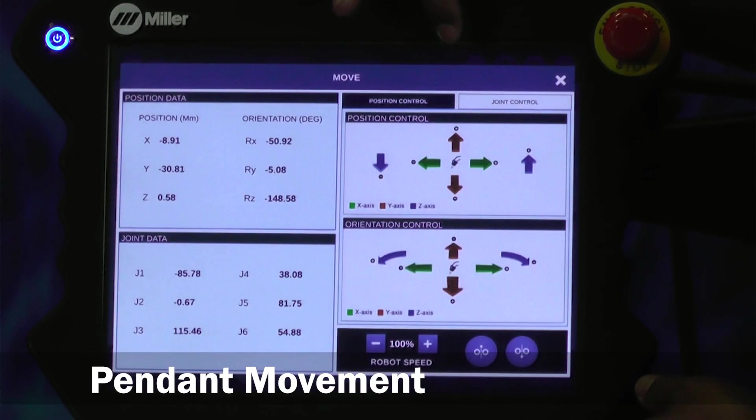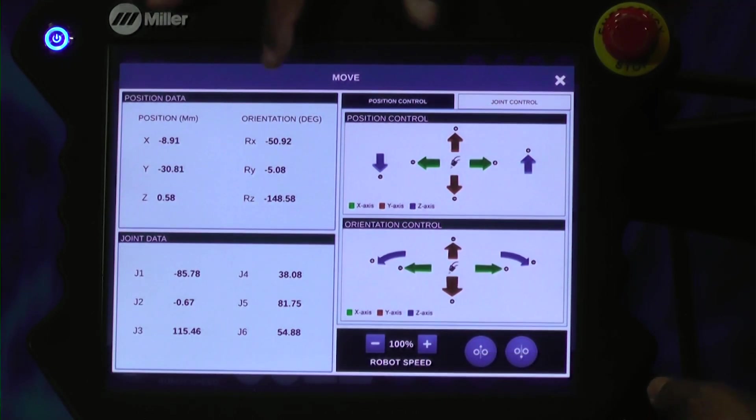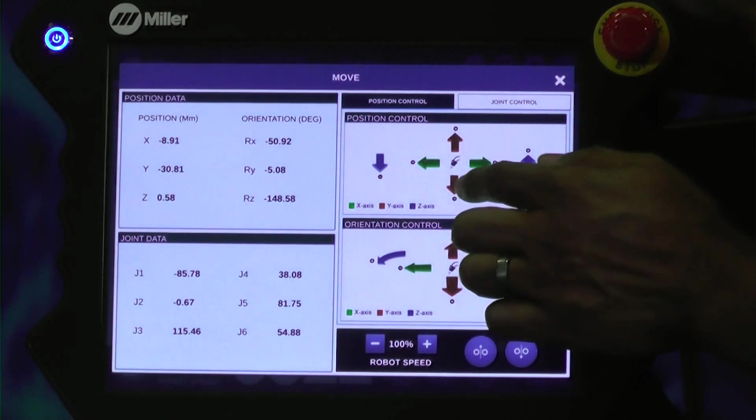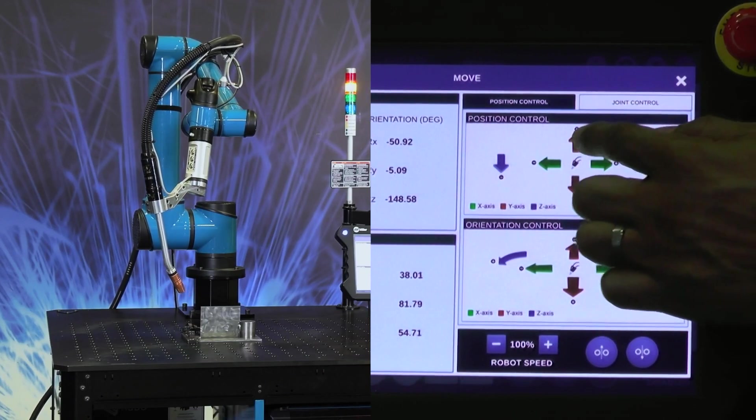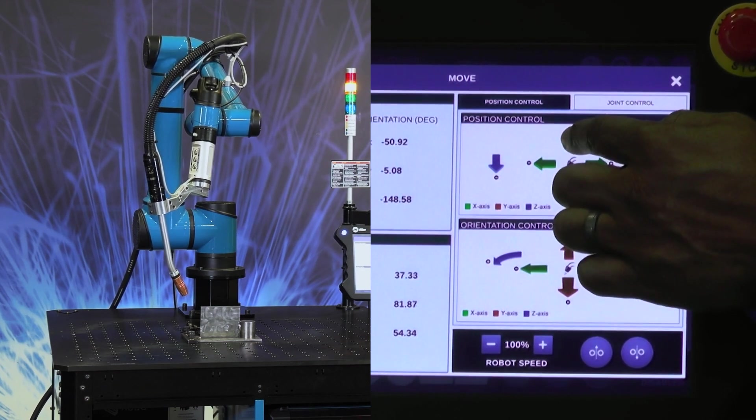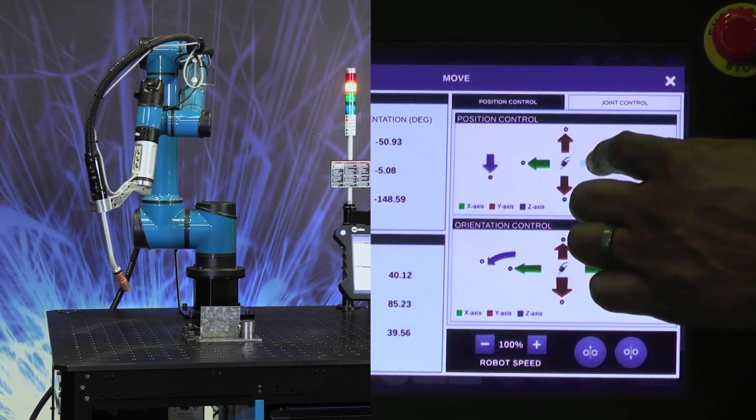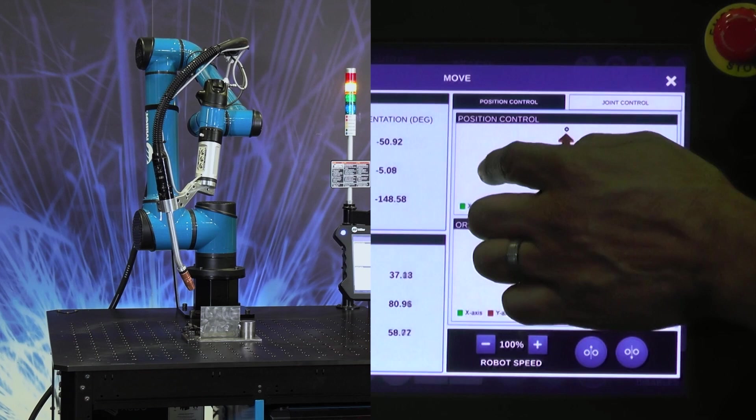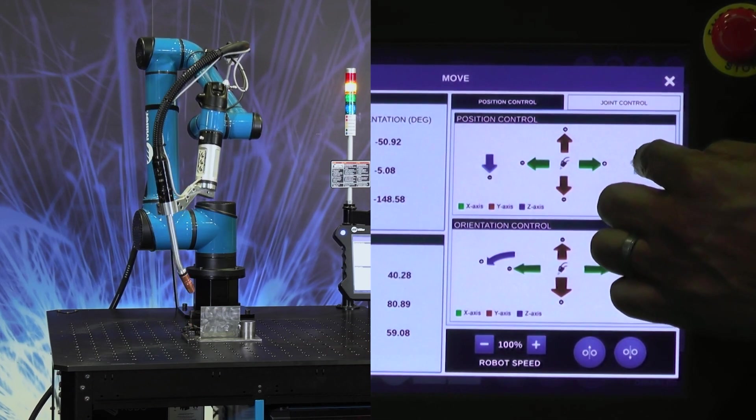We're pressing the move screen. We get our move screen and we have position control and orientational control. With position control, we have plus and minus, we can go to the side, and we have up and down.